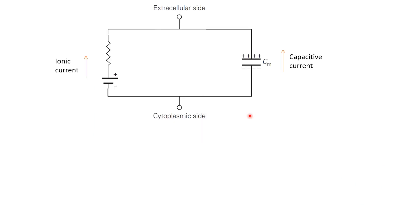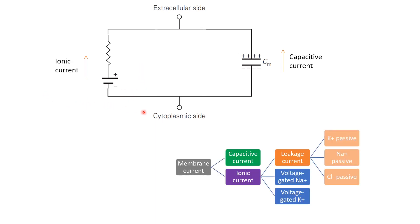The current through the membrane can be divided into subcategories. Broadly there is the capacitive current, which charges the lipid bilayer and comes into play only when the membrane potential is changing — if the membrane potential remains fixed, capacitive current is zero. The ionic current flows through ion channels and can be further subdivided into leakage currents, which flow through passive ion channels (potassium, sodium, or chloride channels that are always open), and active conductances, which include voltage-gated sodium and potassium conductances — the two most important for understanding action potentials.